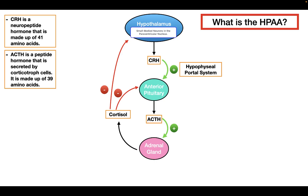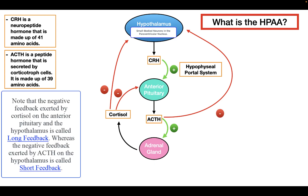The last element closing off the hypothalamic pituitary adrenocortical axis is the effect of ACTH on the hypothalamus. ACTH can also inhibit the hypothalamus from releasing CRH, producing some negative feedback as well. This completes the entire HPAA.